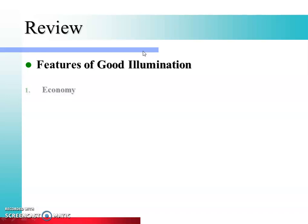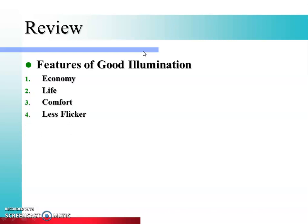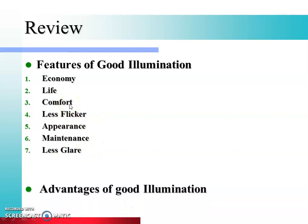The features of good illumination are: first is economy, second is life, third is comfort, fourth is less flicker, fifth is appearance, sixth is maintenance, and seventh is less glare. These are the seven features of good illumination.